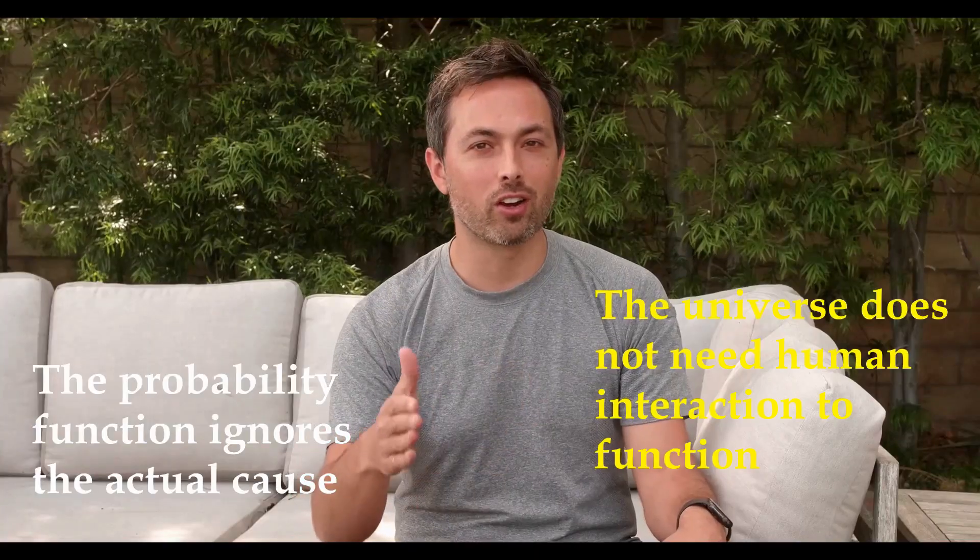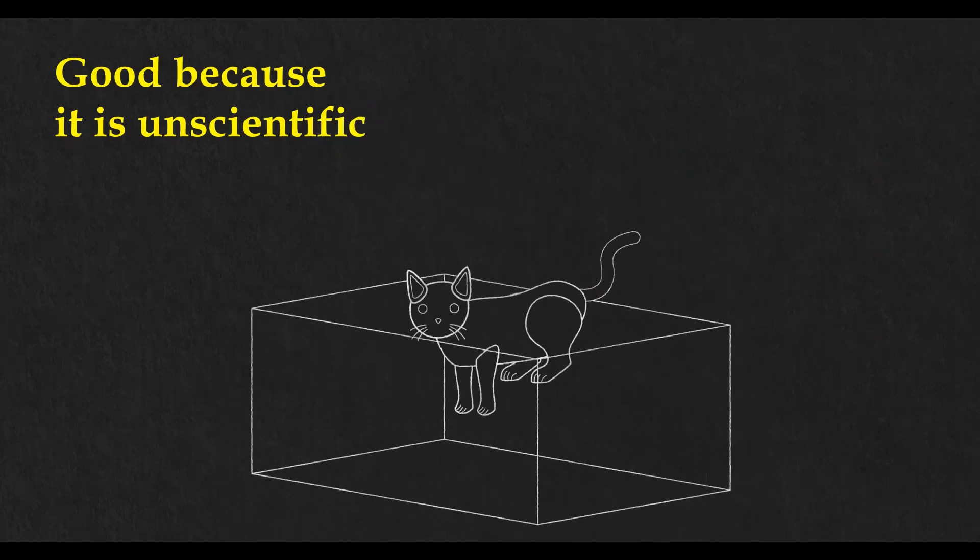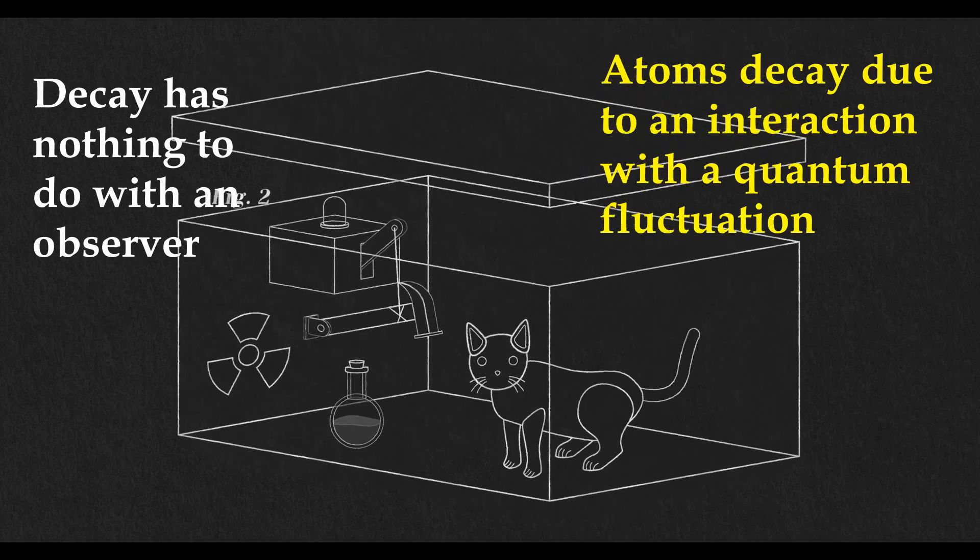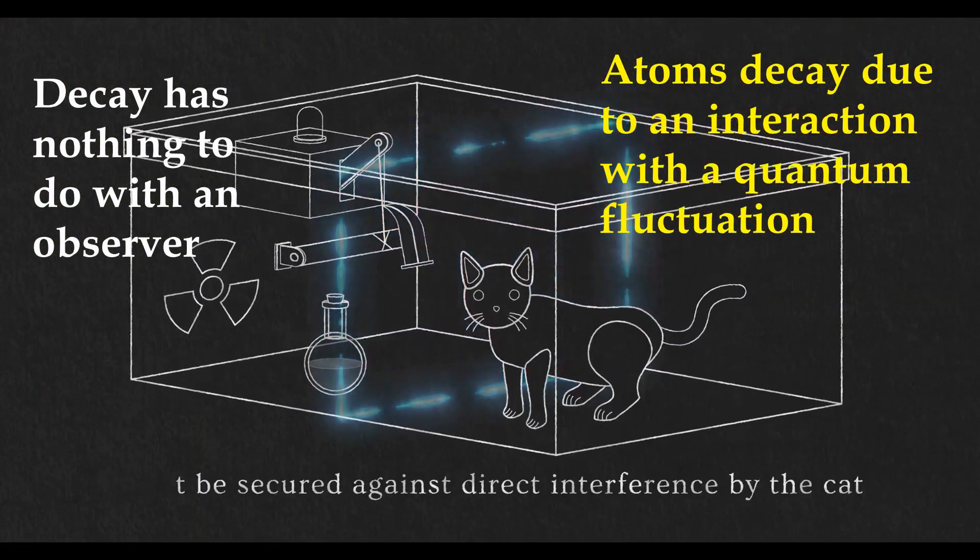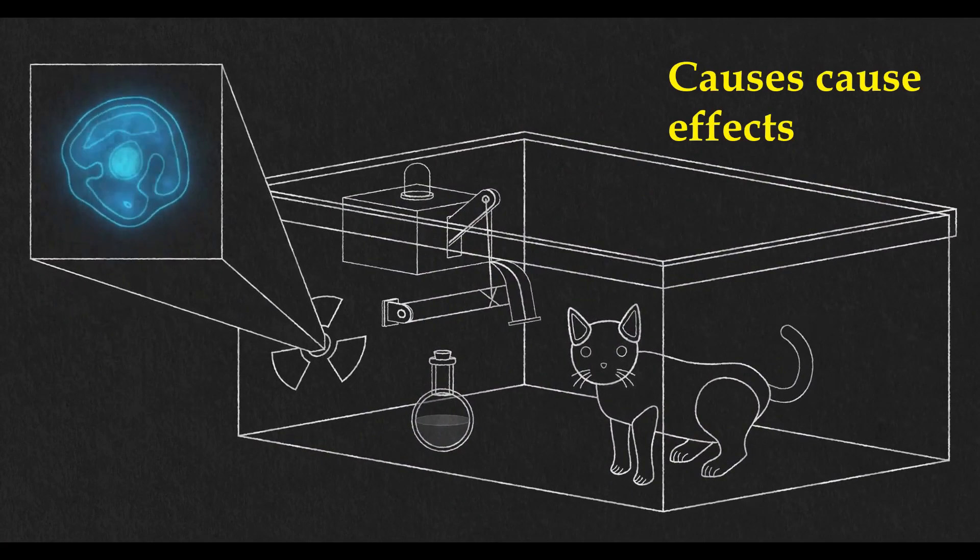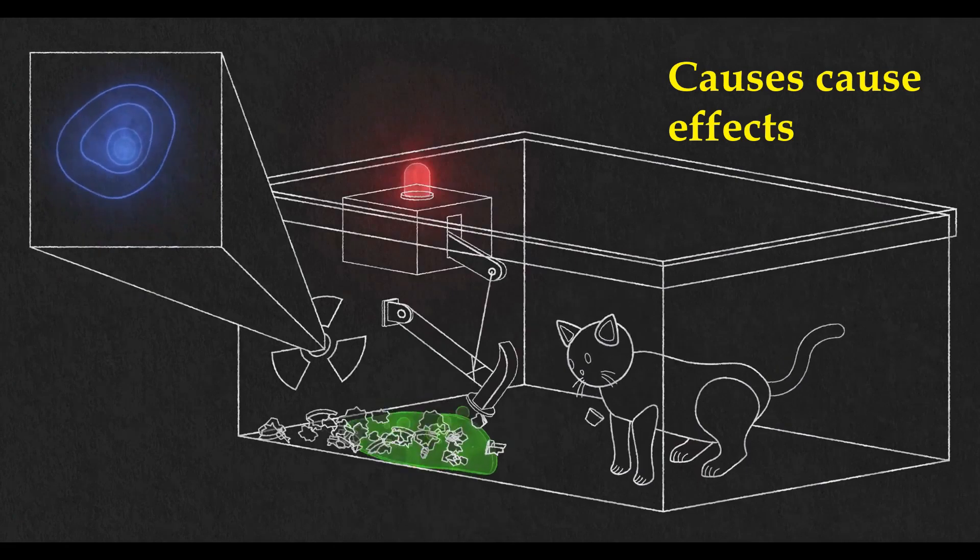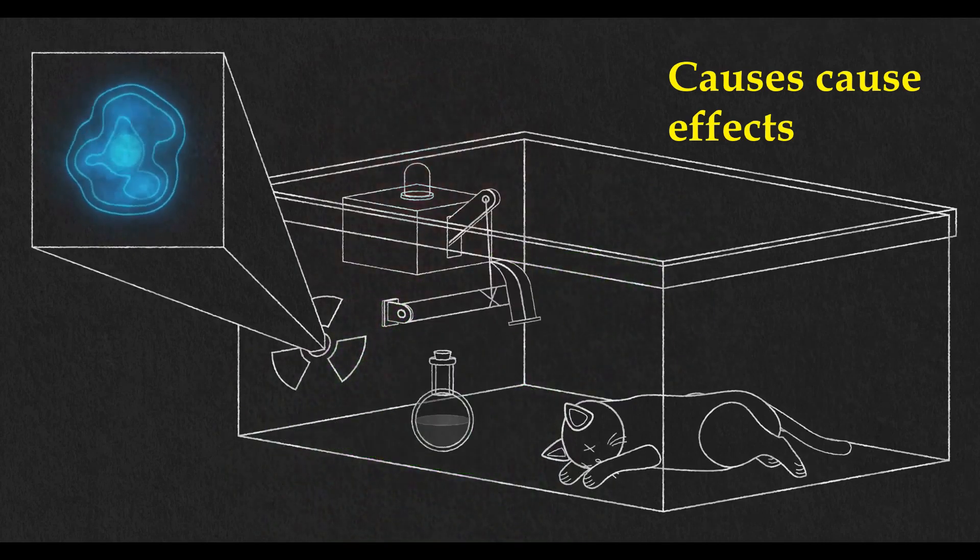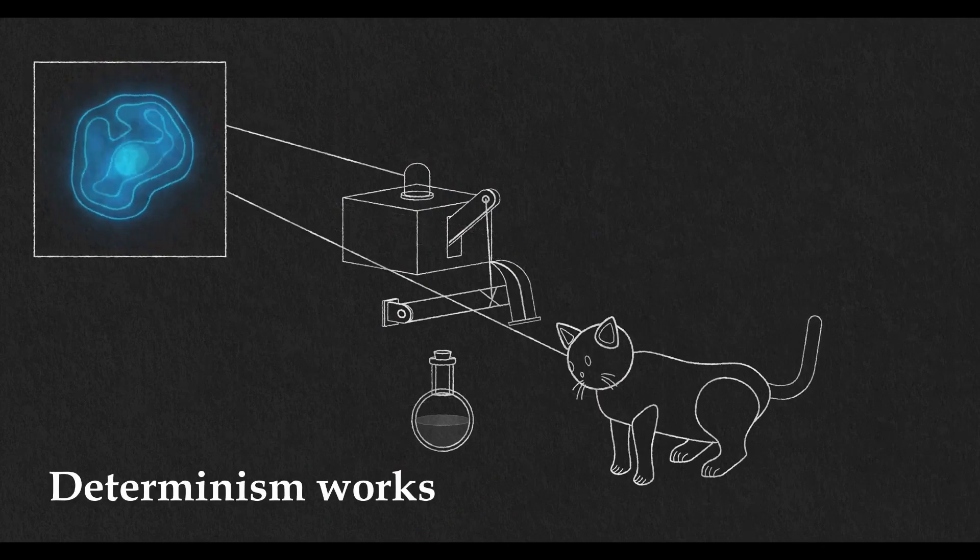[Clip continues]: 'Now Schrödinger himself hated this formulation, which is actually why he invented the famous Schrödinger's cat thought experiment. Put a cat in a box with a radioactive atom, add a radiation detector that triggers the release of poisonous cyanide gas. The whole point of the experiment is to magnify the state of the atom up to the state of something macroscopic and tangible. If the atom decays, the detector detects radiation, releases the poison, and the cat dies. If the atom doesn't decay, the detector doesn't detect radiation, poison is not released, and the cat remains alive. Since the state of the cat and detector apparatus are directly tied to the state of the atom, we say they are entangled.'